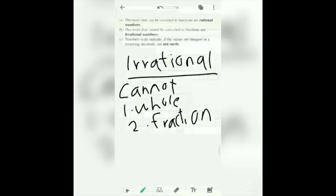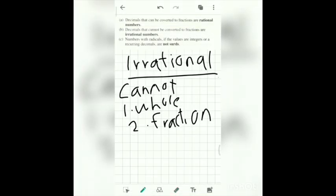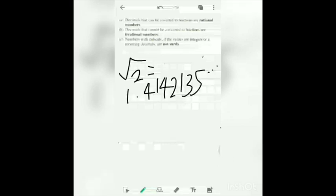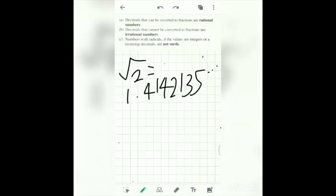For the irrational number, this number is a number that cannot converted to whole number and fraction. The example of this number is 0.267305 and so on. This number cannot convert it to a fraction. Other example is square root of two, which is 1.4142135 and so on. This number cannot convert it to a fraction number.